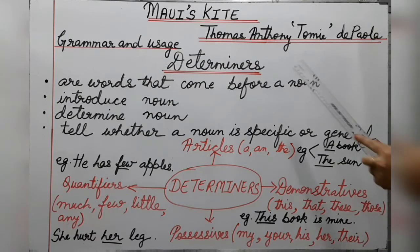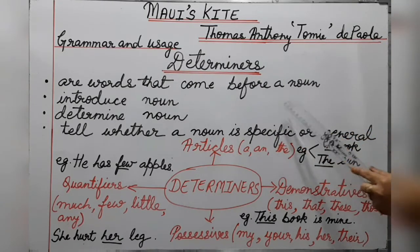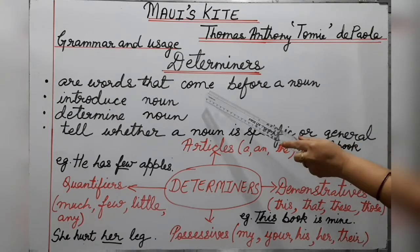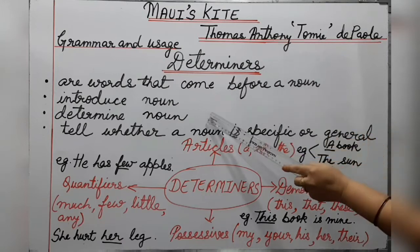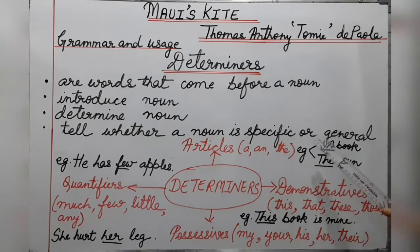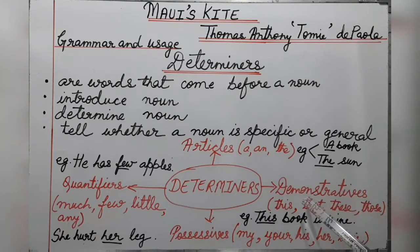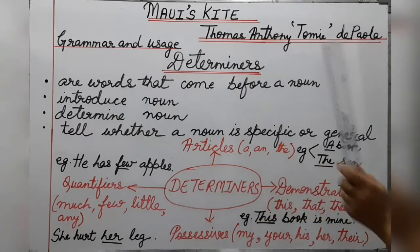First I will explain determiners and then we will do the exercise. Determiners are words that come before a noun. They introduce a noun, determine a noun, and tell whether a noun is specific or general. Determiners are of four types: articles, demonstratives, possessives, and quantifiers.